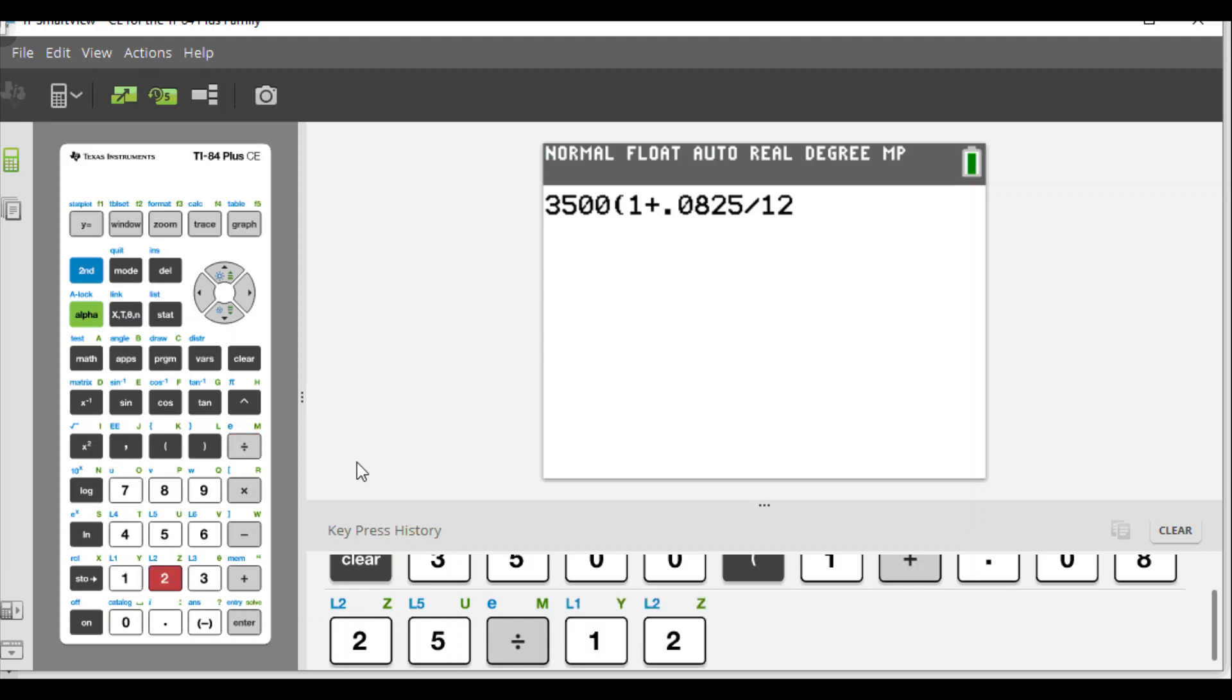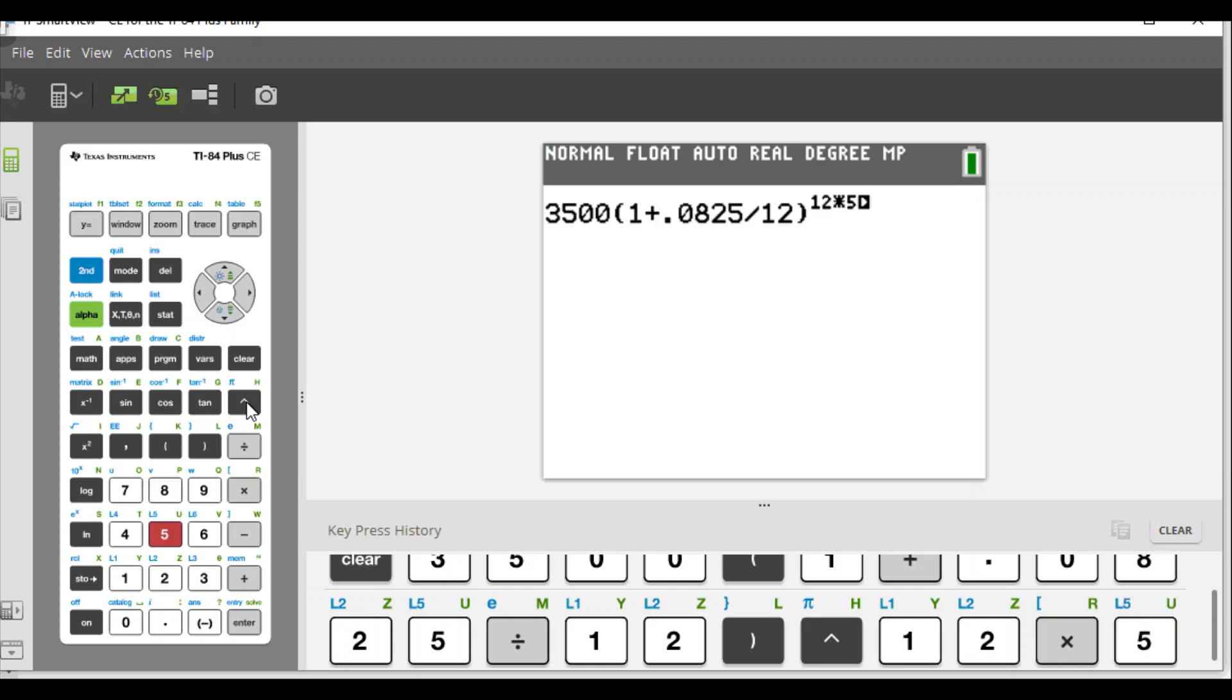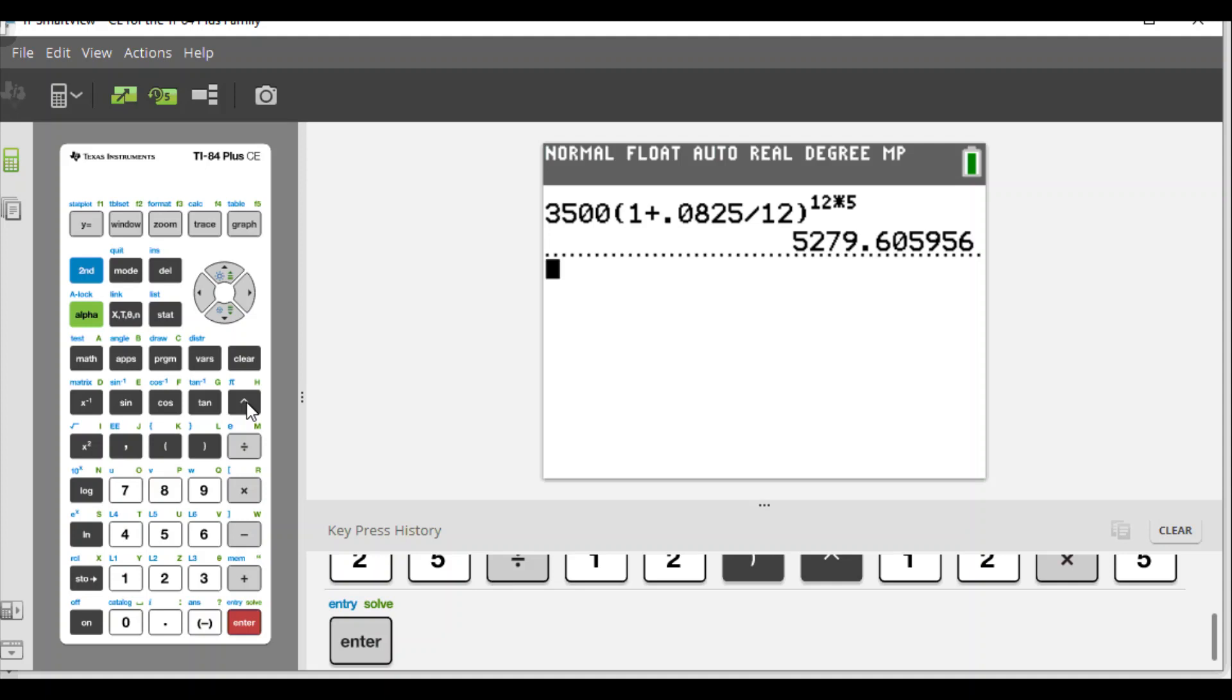We answer this and we get $5,279. Looking at the decimal here, it rounds up, so $5,279.61.